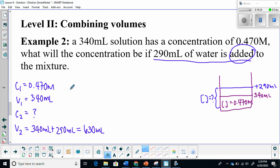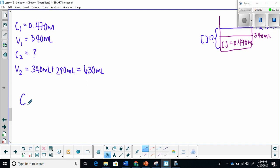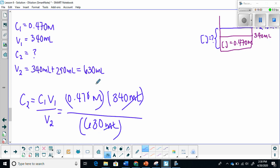Once I isolate the formula, I get C2 is equal to C1V1 over V2, which equals 0.470 moles per liter multiplied by 340 milliliters divided by 630 milliliters. Milliliters cancels out, and you are left with moles per liter, which is great because we're looking for concentration. Once I plug that into the calculator, I get a concentration of 0.254 moles per liter. This makes sense. We've added water. We expect our concentration to decrease.